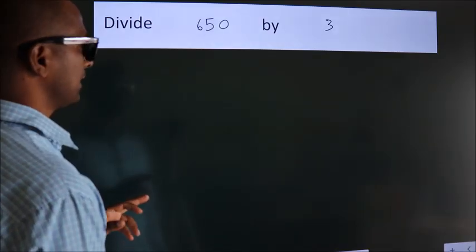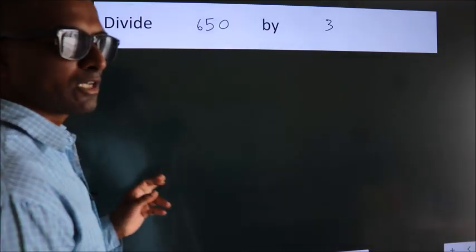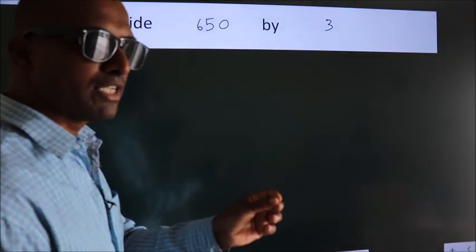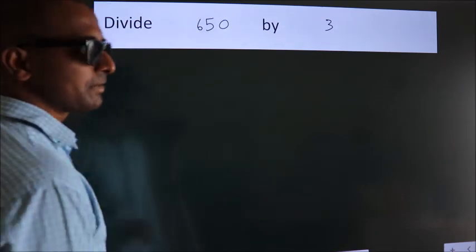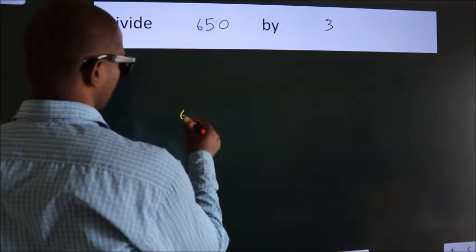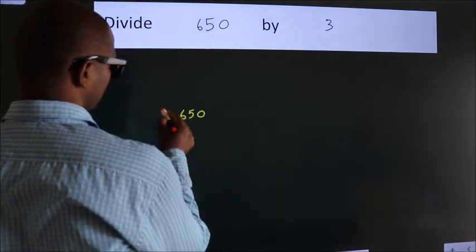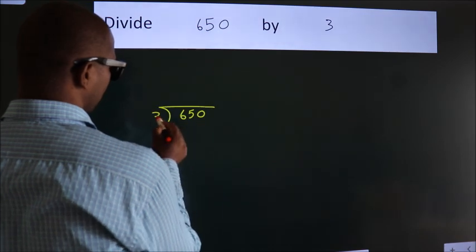Divide 650 by 3. To do this division, we should frame it in this way. 650 here, 3 here.